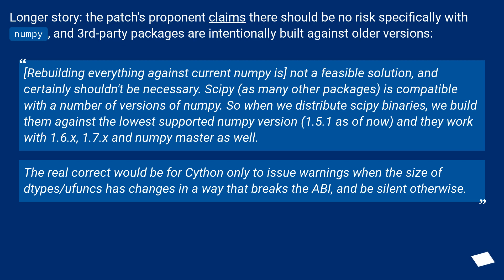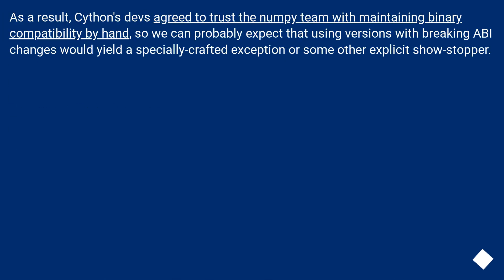The real correct fix would be for Cython to only issue warnings when the size of dtype/ufuncs has changed in a way that breaks the ABI, and be silent otherwise. As a result, Cython's devs agreed to trust the NumPy team with maintaining binary compatibility by hand, so we can probably expect that using versions with breaking ABI changes would yield a specially crafted exception or some other explicit showstopper.